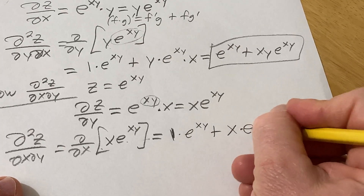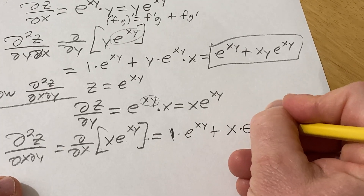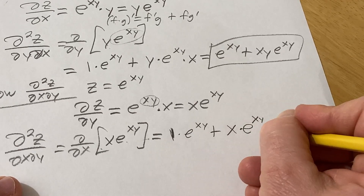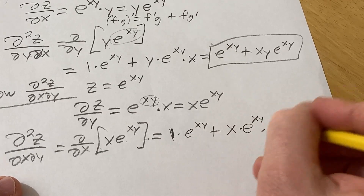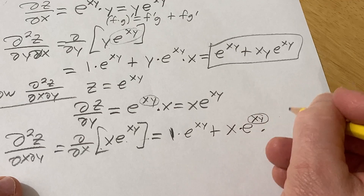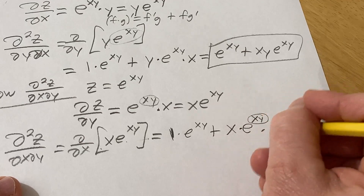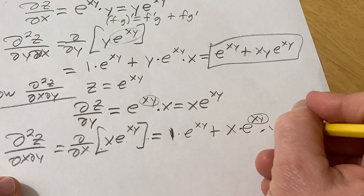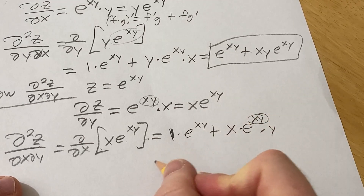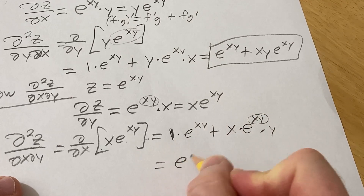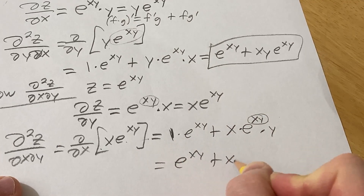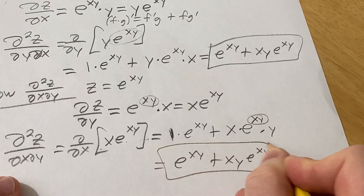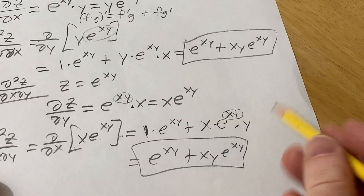Chain rule: take the derivative of the outside, evaluate it at the inside, then multiply by the derivative of the inside function with respect to x. The y is a constant, so the derivative of x is 1 and you just get y. This gives e to the xy plus xy·e to the xy. And as expected, they are identical.